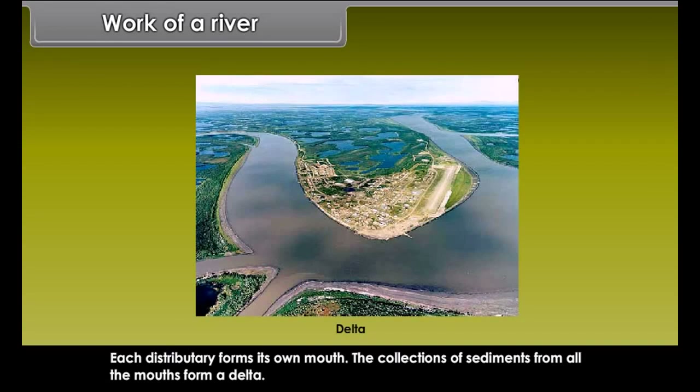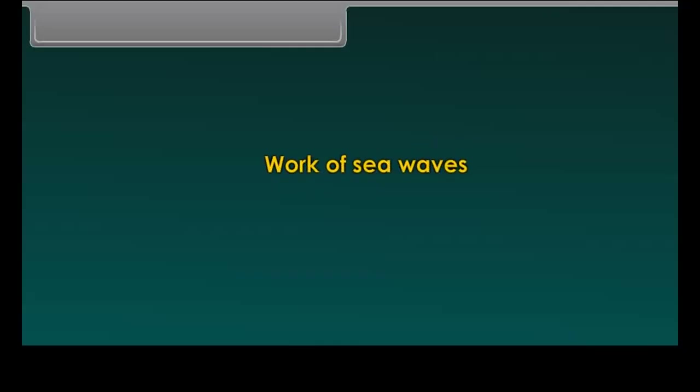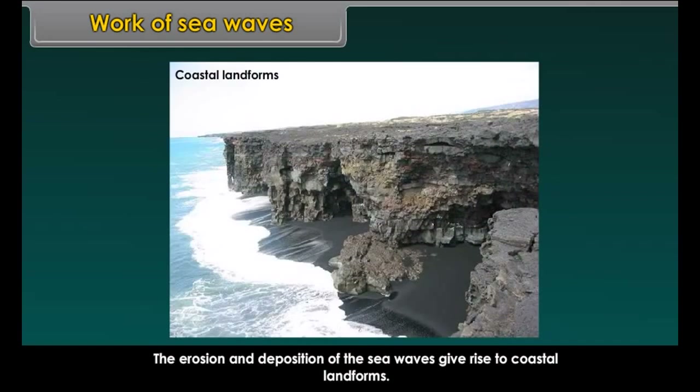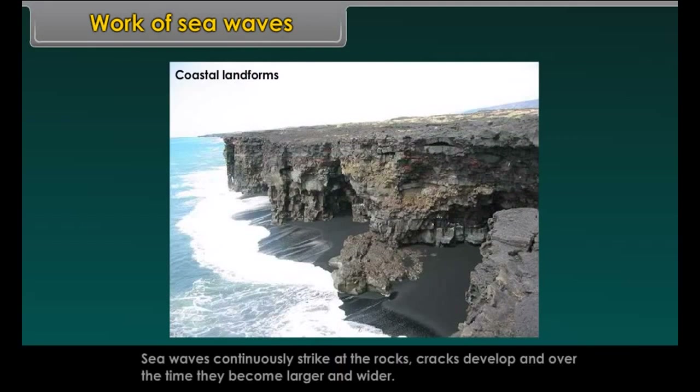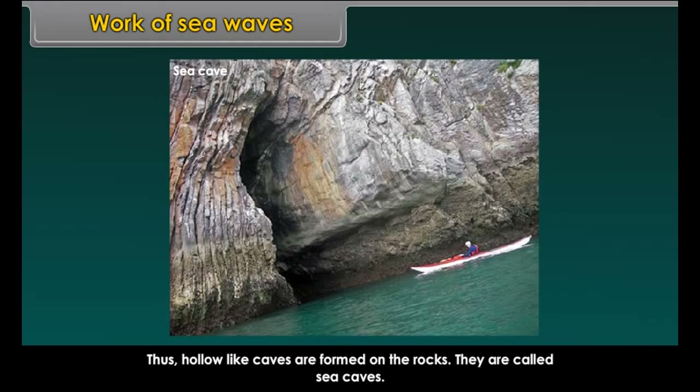As the river approaches the sea, the speed of the running water decreases and it breaks up into a number of streams called distributaries. The river becomes so slow that it begins to deposit its load. Each distributary forms its own mouth, and the collection of sediments from all the mouths forms a delta.